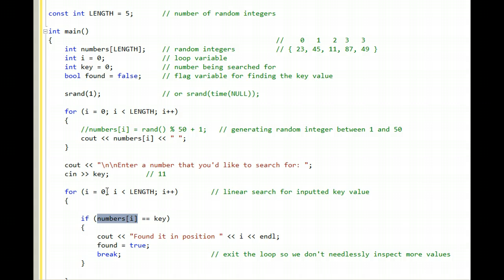Numbers i would be 0 at this point. We're checking to see if numbers i is equal to key, which is 11.